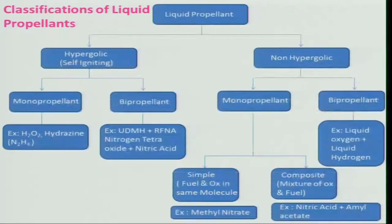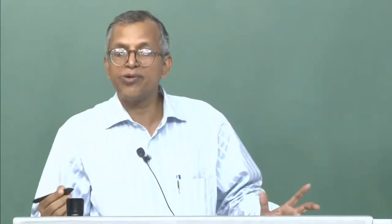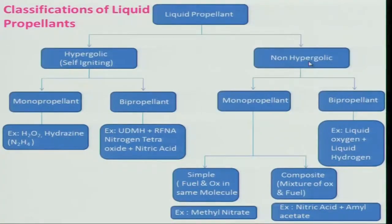After reviewing propellant general characteristics and solid propellants, we now move to liquid propellants. Liquid propellants can be classified into two categories: hypergolic propellant, which is self-igniting — meaning no ignition energy is required to initiate combustion — and non-hypergolic propellant, where you need to provide the requisite amount of ignition energy. Hypergolic propellants are hazardous to handle because fuel and oxidizer react spontaneously on contact.